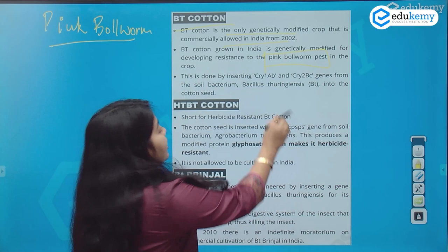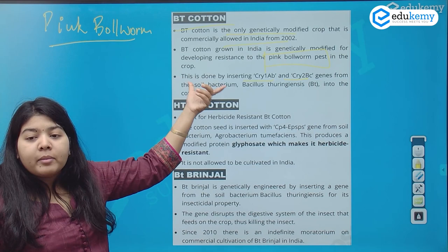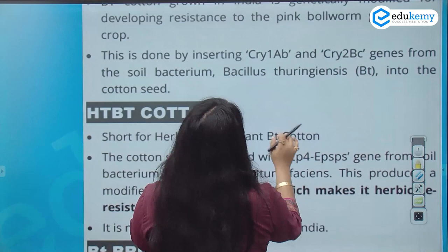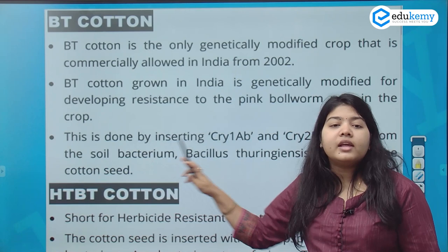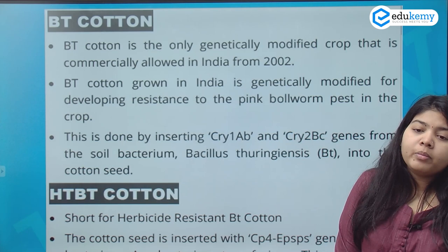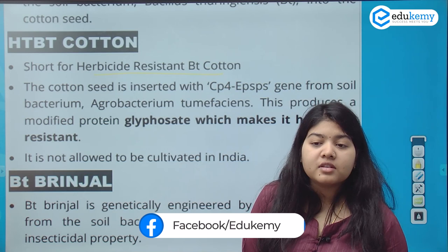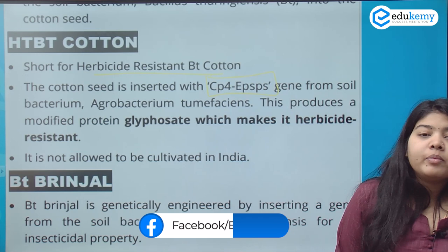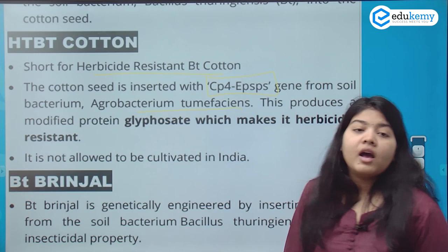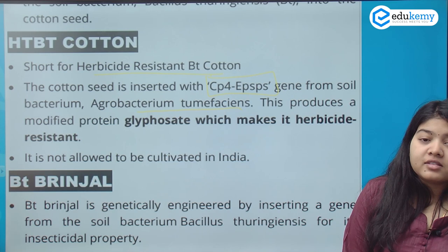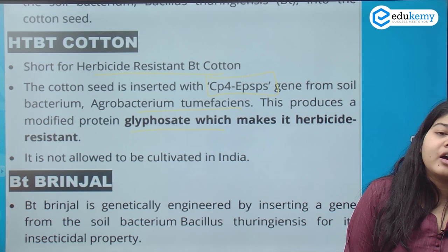Using the rDNA technique, genes from soil bacteria can be inserted into the crop. Next is HT BT cotton — the variety developed for herbicide resistance. Here, the cp4 epsps gene is inserted from soil bacteria called Agrobacterium tumefaciens. It produces a protein that gives glyphosate resistance, making it herbicide resistant. It is not allowed in India.